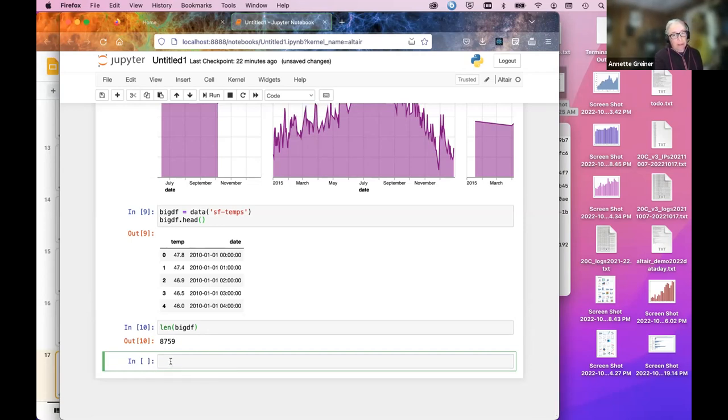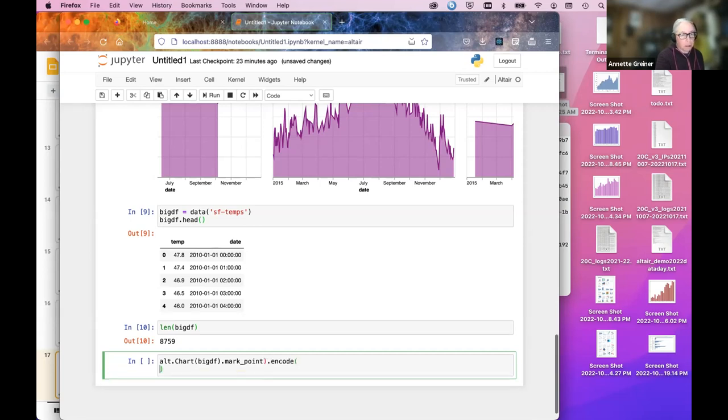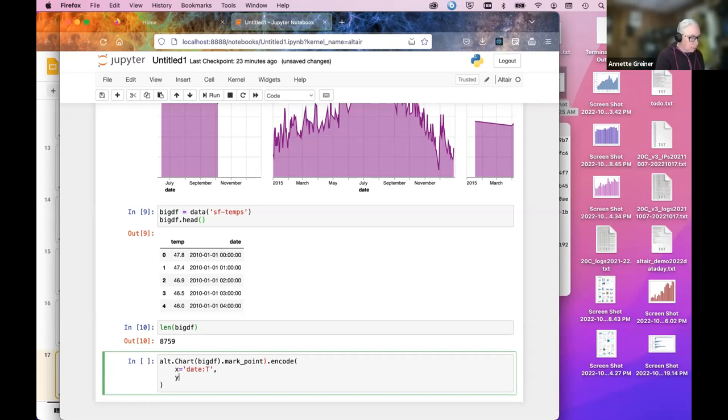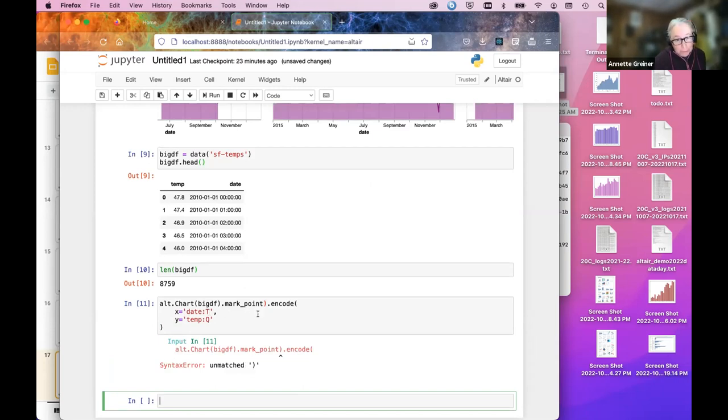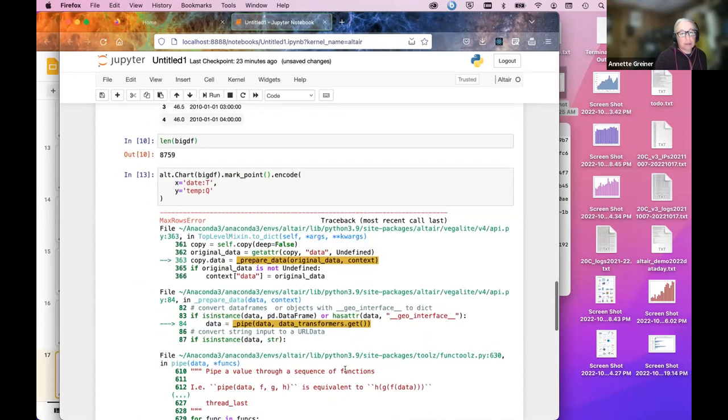This is just 8759 rows. So Altair, by default, has a maximum of 5000 rows. So if I do a quick attempt to make a chart here. Just try to plot a whole lot of points. I happen to know that this will not be happy.